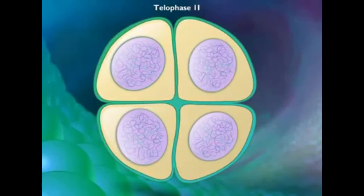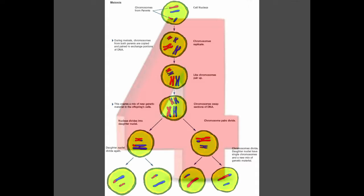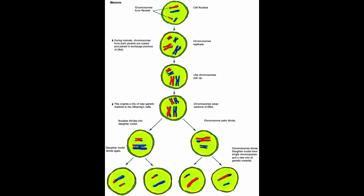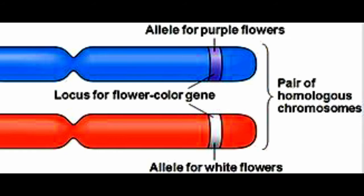In other words, meiosis halves the number of chromosomes. Meiosis produces four gametes from one original cell, and each of these four gametes are genetically different from each other. Each gamete has different alleles, meaning different versions of the same gene.